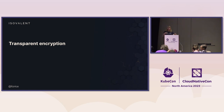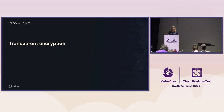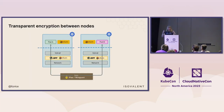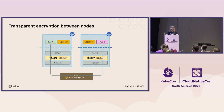We often hear about the requirement to have mTLS in a cluster for encryption. But mTLS isn't the only way to solve the encryption problem. It's often a core principle of zero trust that we want all traffic in our cluster to be encrypted. Another way to do that is with transparent encryption. Transparent encryption uses either WireGuard or IPsec to set up secure tunnels between each pair of nodes, and then traffic between pods on those nodes automatically gets encrypted as it flows through that tunnel — the pods are blissfully unaware.